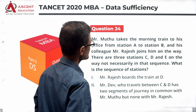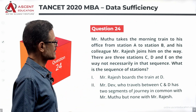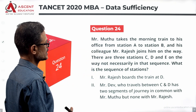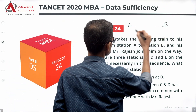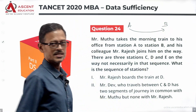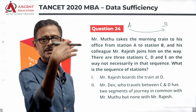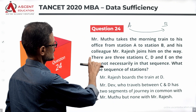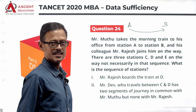Mr. Muthu takes the morning train to his office from station A to station B. His colleague Mr. Rajesh joins him on the way. There are three stations — C, D, and E — on the way, not necessarily in that sequence.